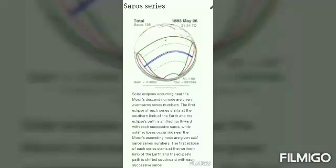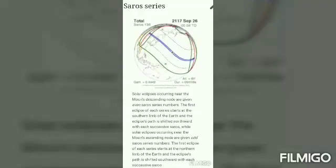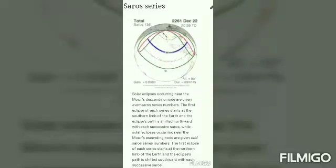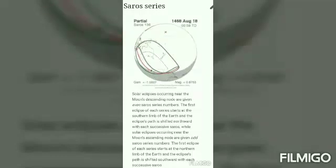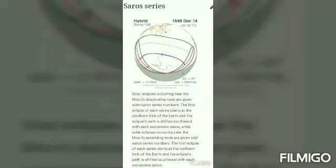Remember, for eclipses to re-occur, not only the Sun, Earth, and the nodes must be in the same position, but also the Moon. It so happens that 19 synodic revolutions of the node are equal to 223 synodic revolutions of the Moon. This means 223 multiplied by 29.53059 days, which gives us 6585.3211 days. So if an eclipse is occurring today, an identical eclipse would occur after 6585.3211 days.